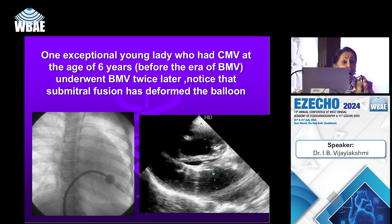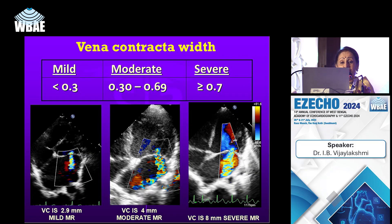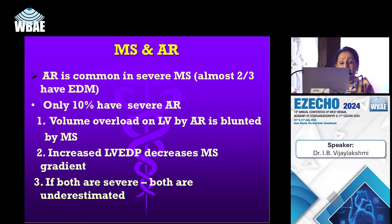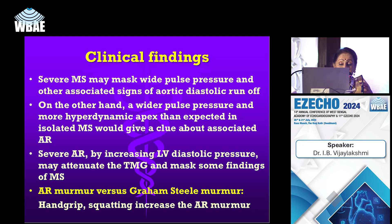The sub-mitral orifice can show severe sub-mitral fusion. During balloon dilatation in such patients, you may rupture the chordae and produce MR. Sub-mitral thickening and fusion are critically important. When you insert the balloon, the distal portion can become deformed if caught in the chordae. To manage this, a peripheral balloon is used first to dilate the papillary muscle and sub-mitral structures before full balloon dilatation.